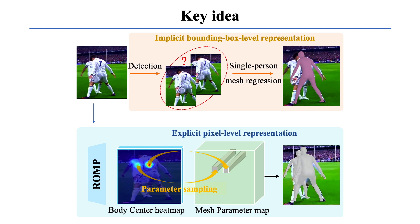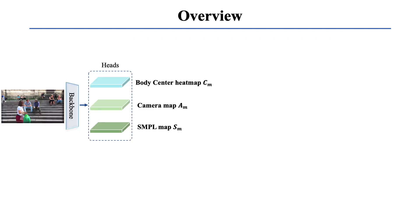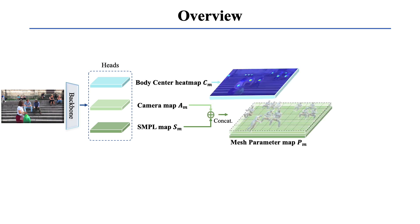The mesh parameter map captures the body parameters of the different people. ROMP is built using a simple multi-head architecture. Each head estimates different maps from the backbone features. The mesh parameter map is the combination of the camera and SMPL maps. At each position, the parameter vector describes pose, shape, and location of a 3D body mesh.